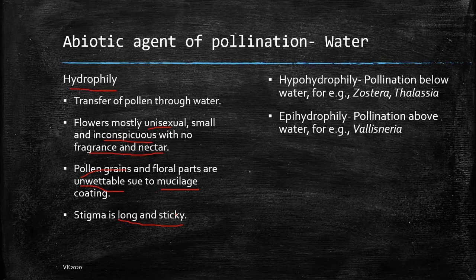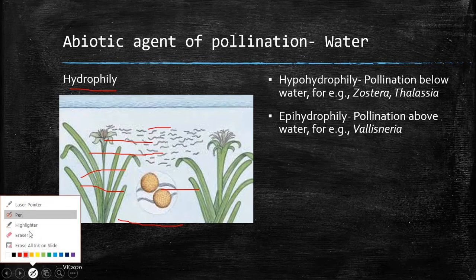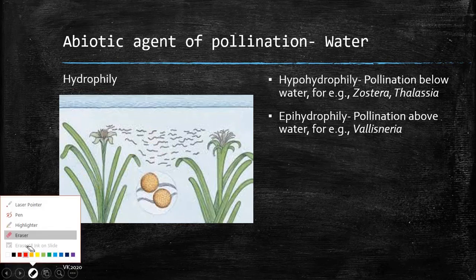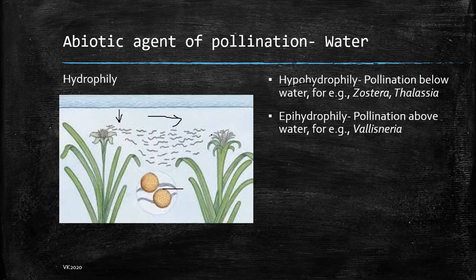There are two types of hydrophily commonly observed. One is hypohydrophily, wherein the pollen grains released from the plant — in examples like Thalassia — travel just below the surface of water. They move with the flow of water, and once these pollen grains, which are large and have ribbon-like structures, reach the female reproductive organ — the stigma region — they just attach to the stigma and spiral around it with their ribbon-like structures, ensuring optimal attachment.